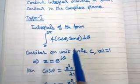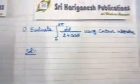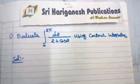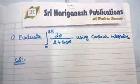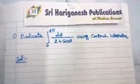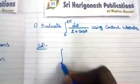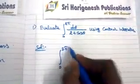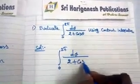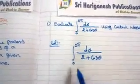Now, a problem based on the contour integral of Type 1: evaluate the integral from 0 to 2π of dθ divided by (2 + cos θ).